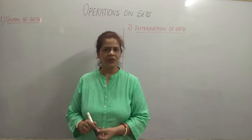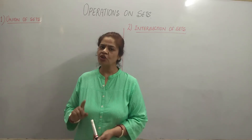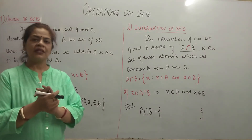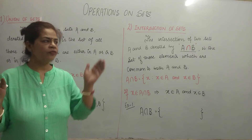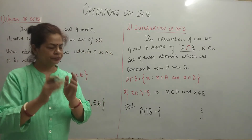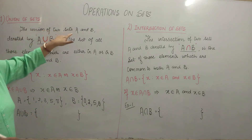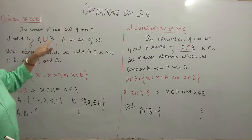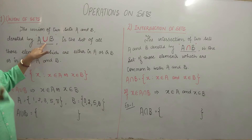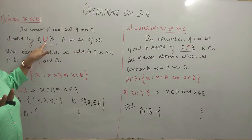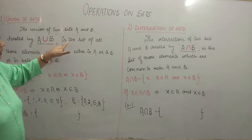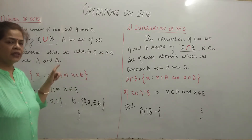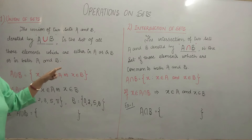Now we are going to study about operations on sets. The first operation is union of sets. Union of two sets is the combination of elements of A and B taken together. In language, we say the union of two sets A and B is represented by or denoted by A union B. For union, we use this 'U' letter. It is a set of all those elements which are either in A or in B, that is, in both A and B.